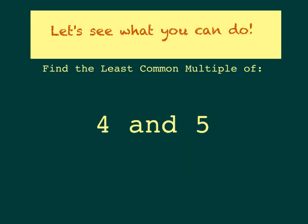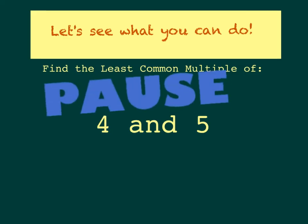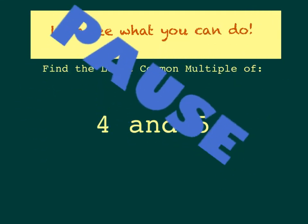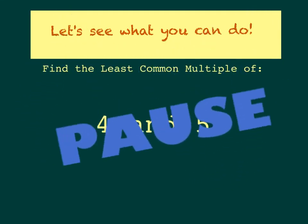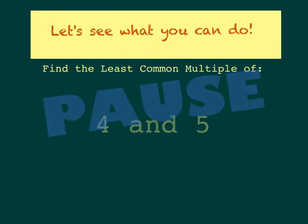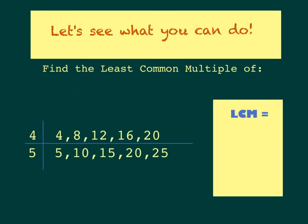Now it's time to see what you can do on your own. For this problem, you're going to find the least common multiple of the numbers 4 and 5. Pause the video while you solve this problem, then restart when you're ready to see the answer. After identifying the multiples, the smallest one they have in common is 20. Therefore, the least common multiple is 20.